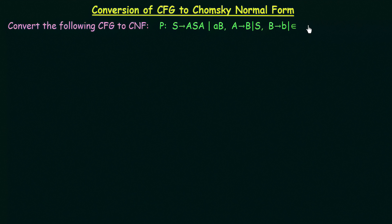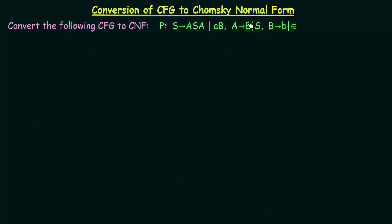In the last lecture we studied Chomsky normal form and the steps to convert a given context free grammar to Chomsky normal form. If you have not watched the previous video, I suggest you watch it first before proceeding. In this lecture we will see an example of how to convert a CFG to Chomsky normal form.